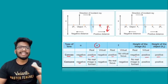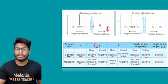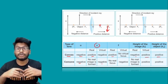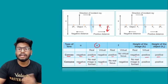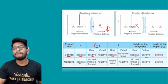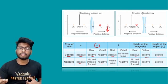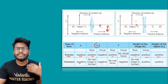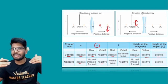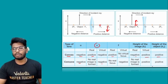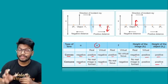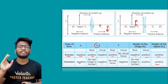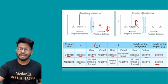For a concave lens: object distance is always negative. There are no real images formed — all images are virtual, so image distance is always negative. There is no real focus either, so focal length is always negative. Height of the image is always positive because virtual images are always erect, and anything above the principal axis is positive. Height of the object is always positive. Take a screenshot and keep it for your final exams.